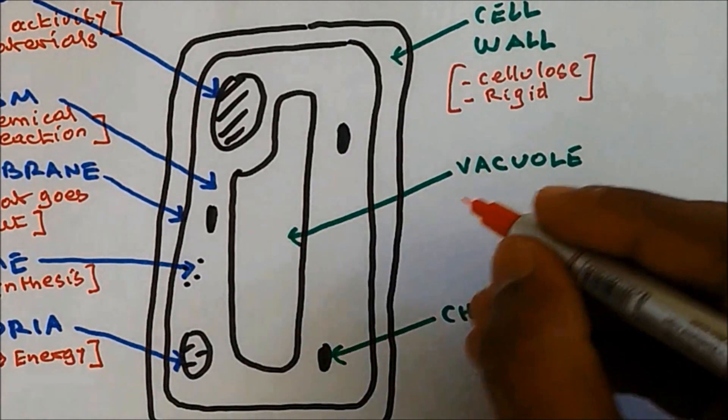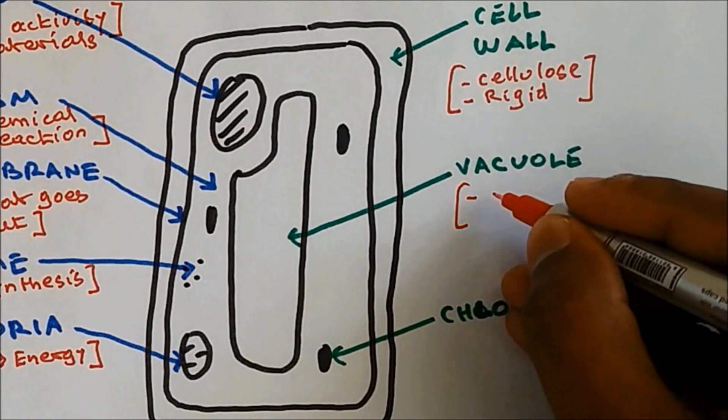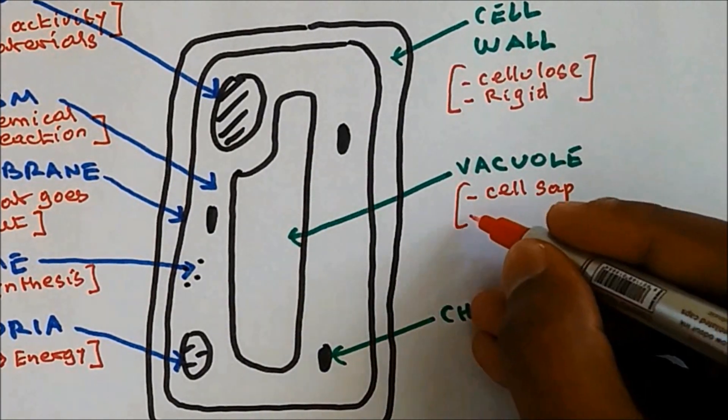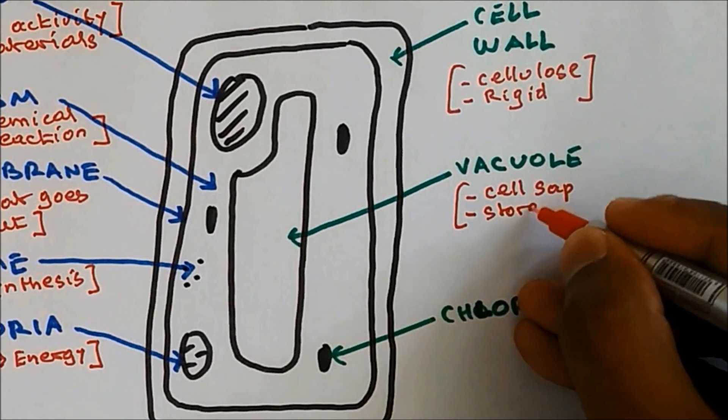Now vacuole. Vacuole contains cell sap and cell sap stores sugar and salt.